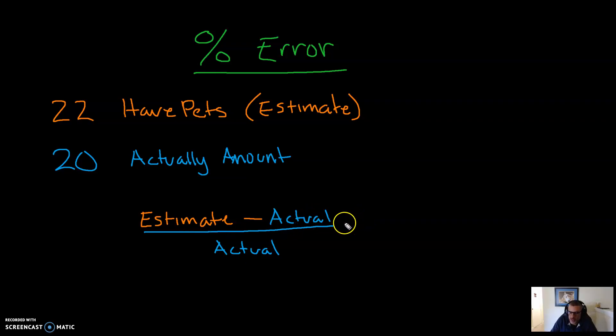So let's just go ahead and plug in some numbers here. And there is a little twist here, which we'll get to in the next problem. Our estimate in this case was 22. The actual amount was 20. And I'm going to go ahead and divide by 20. 22 minus 20 is two divided by 20.